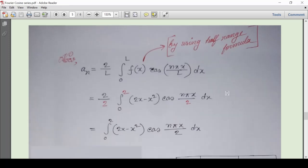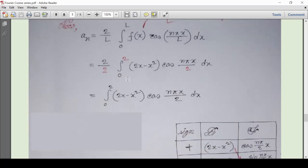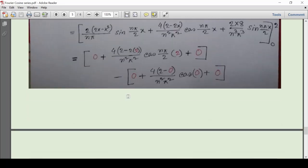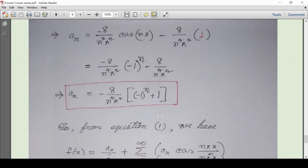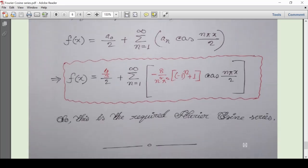That means I have just used the half-range formula. I can also use the full-range formula here. At that time, the function will be defined from minus 2 to 2, meaning it will be a piecewise function. But we don't need to do that because it will be time-consuming. By doing this, we can have the direct result here. You can see this is our a_n finally. After plugging the value of a_0 and a_n in the main function, we have the required Fourier cosine series.